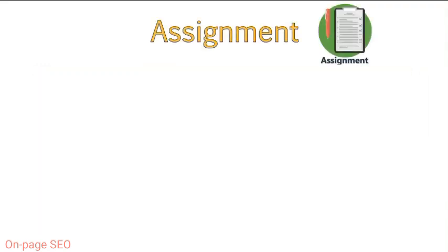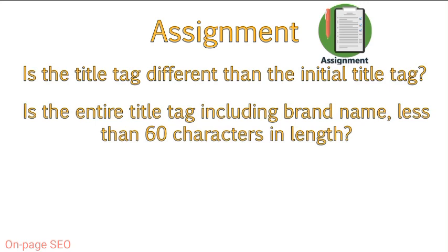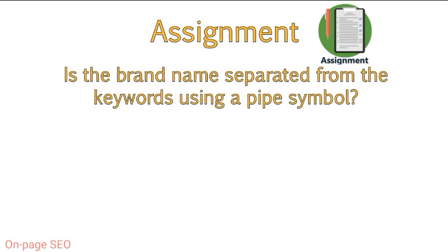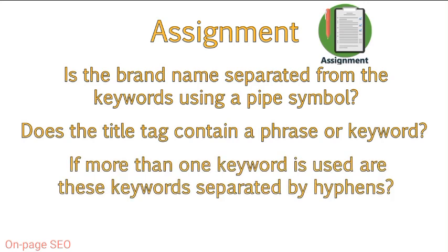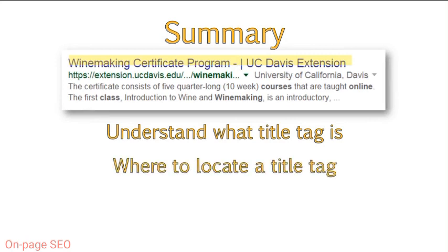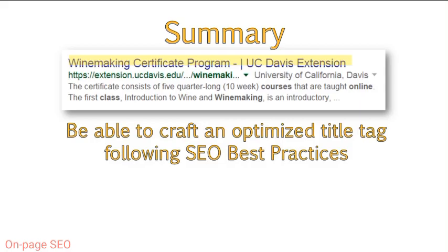When you are done, you will be asked to review another classmate's title tag. When reviewing a classmate's title tag, look to make sure they made the following changes: Is the title tag different than the initial one? Is the entire title tag including brand name less than 60 characters? Does the title tag include the brand name? Is the brand name separated from the keywords using a pipe symbol? Does the title tag contain a phrase or keyword you might search for? If more than one keyword is used, are these separated by hyphens? You should now understand what a title tag is and where to locate it in search results, the browser, and in the source code of a website.